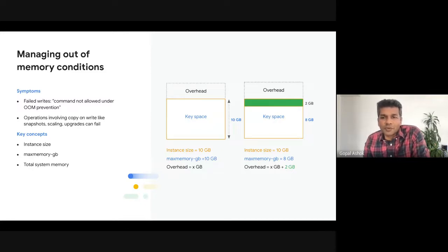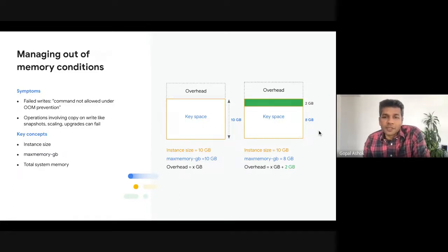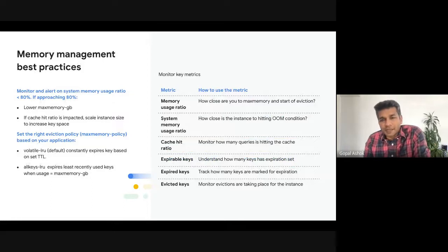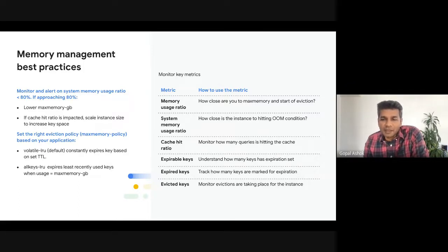You can give an instance more memory overhead by lowering the max memory. As you can see in the diagram, by lowering max memory you are adding additional system overhead — for example, an additional 2 GB for system use. This is a configuration you can set for the instance using UI or API. You should monitor and alert on the system memory usage ratio metric, which shows the amount of system overhead the instance has. The recommendation is that it should be closer to 80%. The closer it gets to 100%, the higher the likelihood of failing due to out-of-memory conditions.